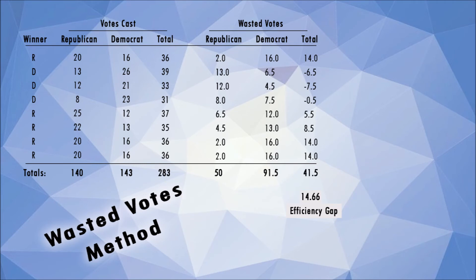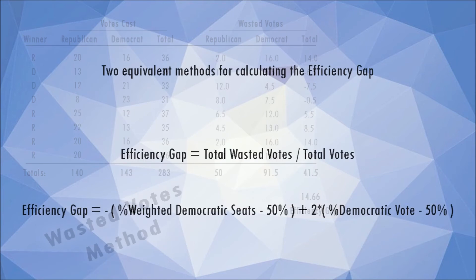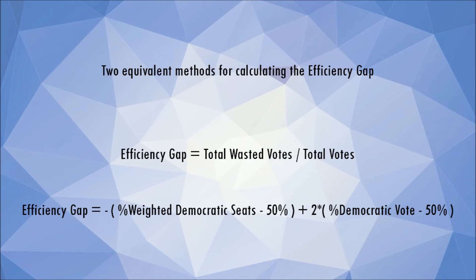So here is the kicker: yes, both of these methods give the exact same result. But the fact that the efficiency gap can be written as a seats-votes equation has legal implications. The seats-votes equation implies that a party is entitled to a certain percentage of legislative seats given a certain percentage of statewide votes. If these percentages do not match up proportionately, the efficiency gap will return a large number indicating gerrymandering. So the efficiency gap becomes a measure of proportional representation, and the courts have made it clear that proportional representation is not guaranteed. So it is likely that the efficiency gap will no longer be allowed as part of a legal argument.